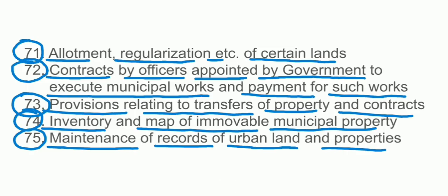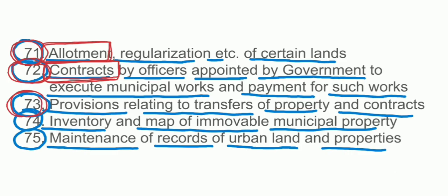Now let's pick up key terms from sections 71 to 75. Section 71 — keyword: allotment of property. Section 72 — keyword: contract, contract of property by officers of municipality. Section 73 — keyword: transfer of property. Section 74 — keyword: inventory of property. Section 75 — keyword: maintenance.